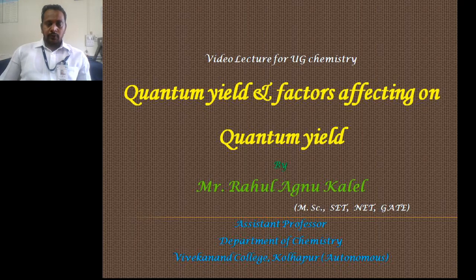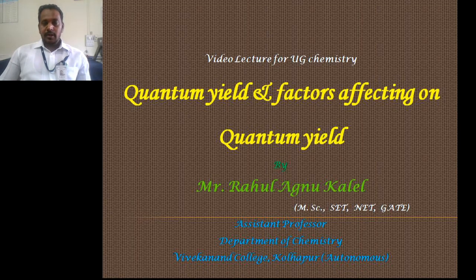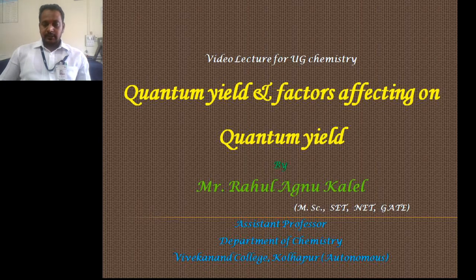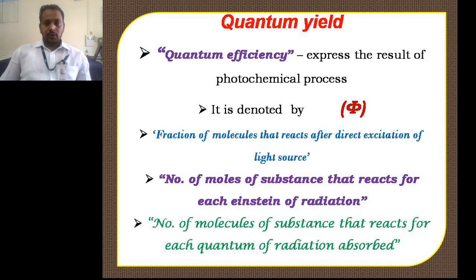Today we are going to discuss another term that is used to express the results of a photochemical reaction. In an ordinary chemical reaction, yield is commonly used to express the efficiency of that reaction. Similarly, to express the efficiency of a photochemical reaction, one terminology is used — that is quantum yield — and it is denoted by the symbol phi. It is also called quantum efficiency.